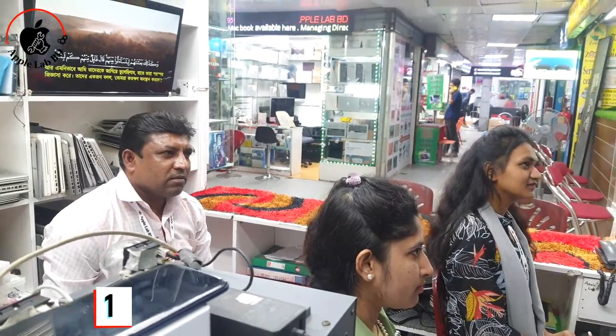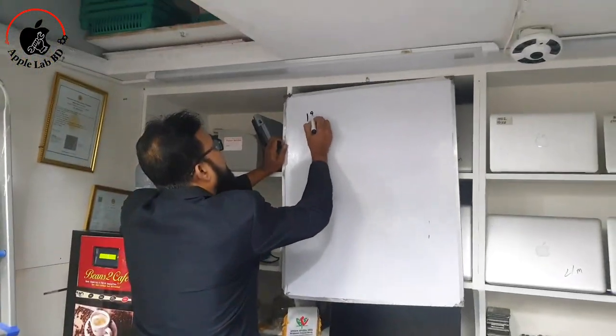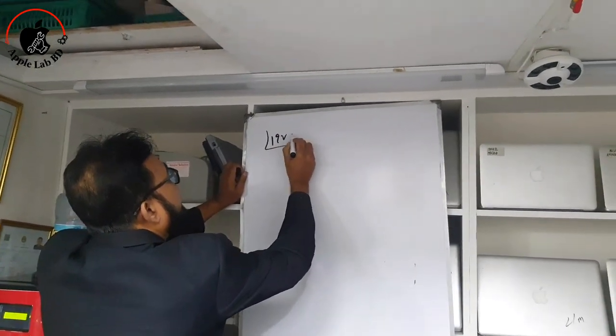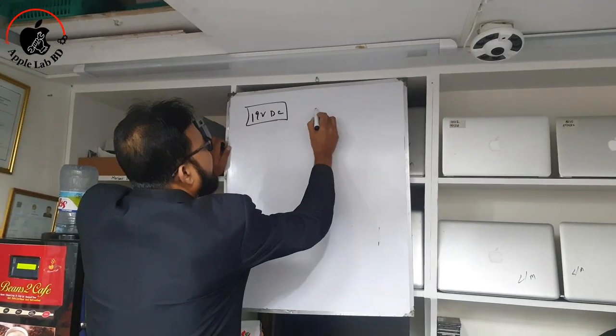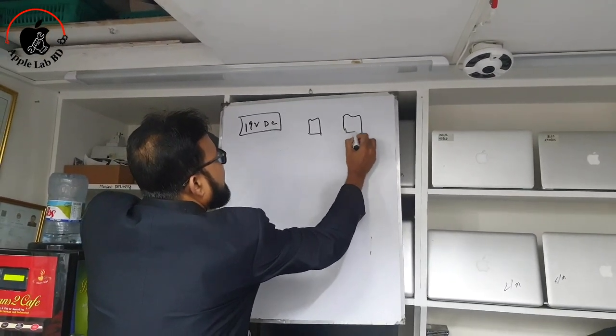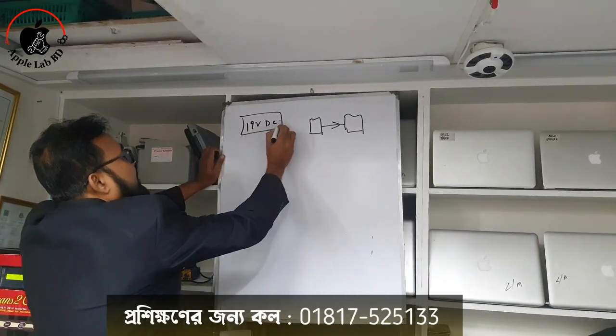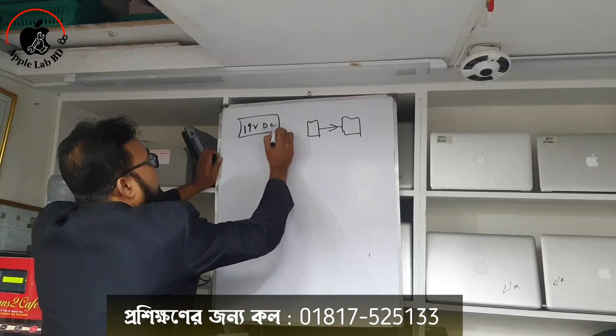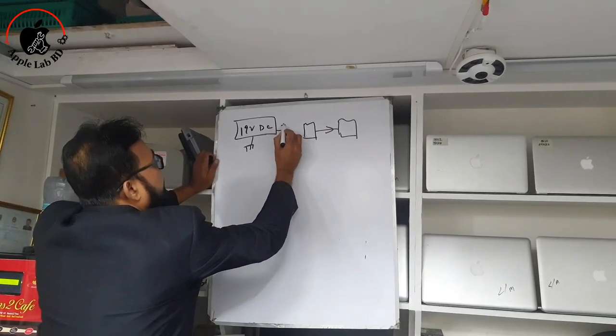In our class, we have 19 volts. This is 20 volts. This is the MOSFET. DC volt data supply has 19 volt, right, actor negative, actor plus, positive volt.